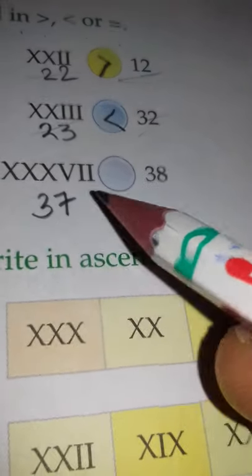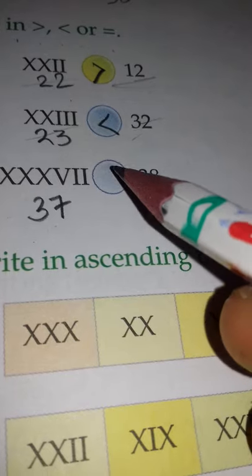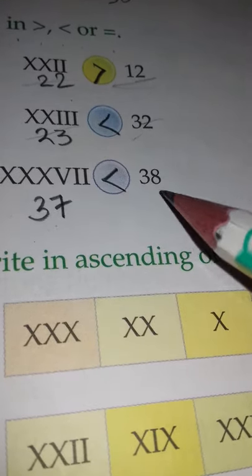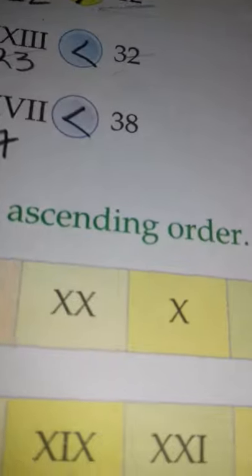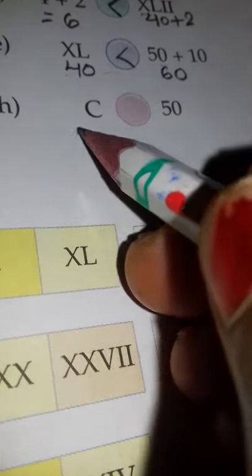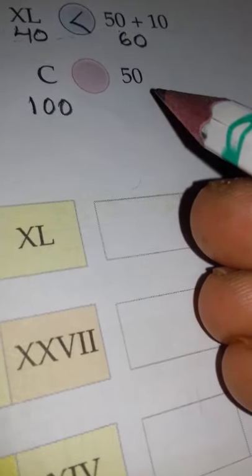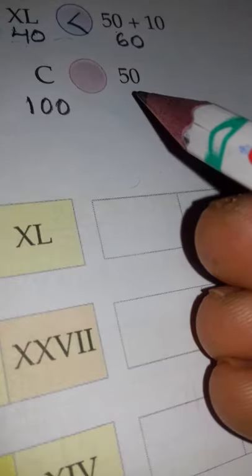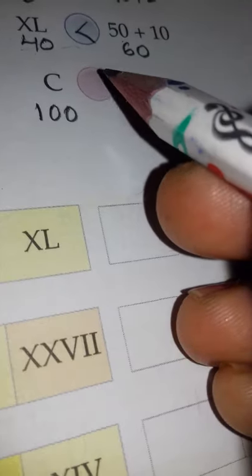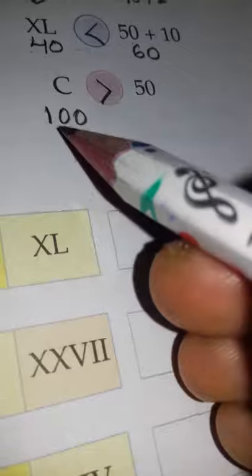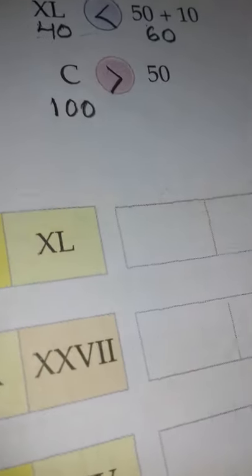Part (h): One side the symbol C is given, which denotes 100. The other side is given as 50. So is 100 greater or is 50 greater? Very good, 100 is greater, so C is greater than 50.